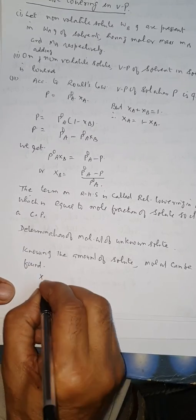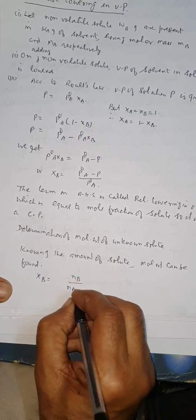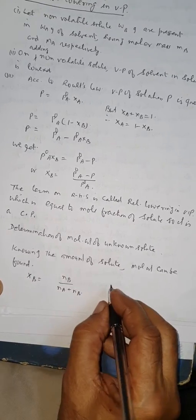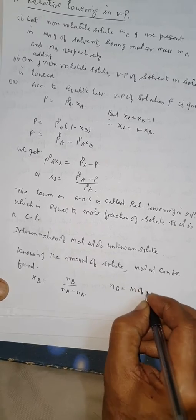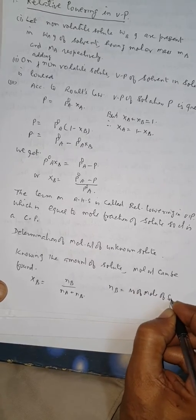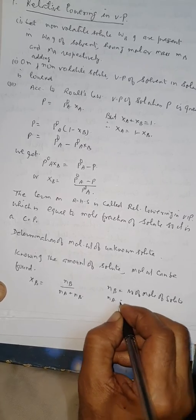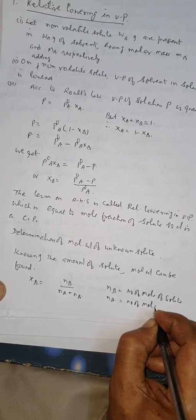XB is equal to NB divided by NA + NB, where NB is number of moles of solute and NA is number of moles of solvent.